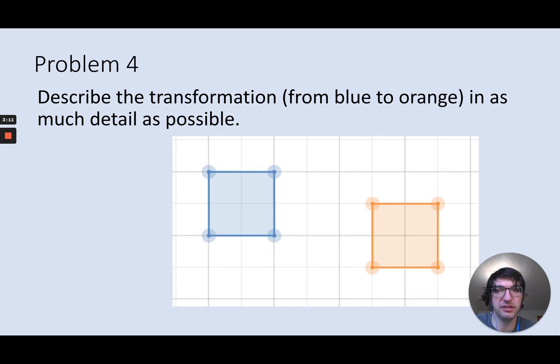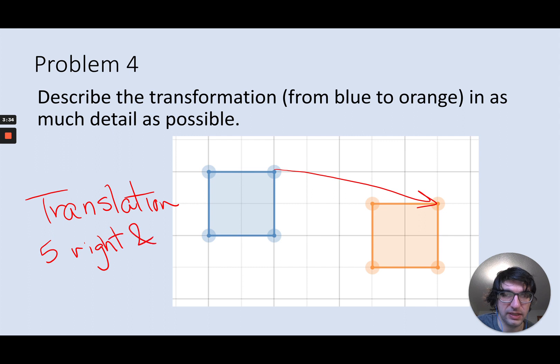Okay, we can manage this. How about this next one? What do we have going on here? So from blue to orange, hmm, a couple different possibilities, but I think the most clear, easiest one would be to call this a translation. And I go one, two, three, four, five units to the right, and then I go one unit down.